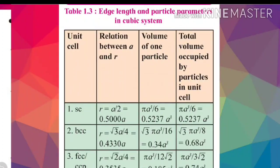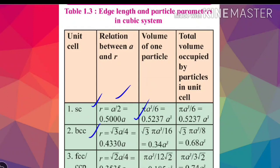Now the relationship between side and radius. For simple cubic (SC), the relation is r = a/2, which simplifies to r = 0.500 × a. For body centered cubic (BCC), the relation is r = 0.433 × a.